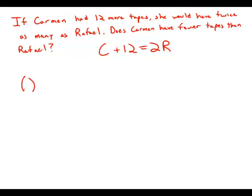So let's look at the statements. Statement number one tells us that Raphael has more than five tapes. Well, here's the thing: we know that Carmen has a certain number of tapes, and when we add 12, that's going to be more than 12. That's going to be twice Raphael.